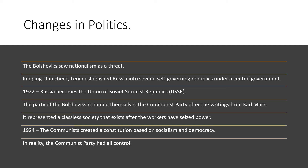There were also changes in politics. The Bolsheviks saw nationalism as a threat — when people feel their country is the best, they sometimes want to start revolutions, which was one of the main causes of World War One. To keep nationalism in check, Lenin established Russia into several self-governing republics under a central government. In 1922, Russia officially became known as the Union of Soviet Socialist Republics, or the USSR, a name it would keep for about 50 to 60 years.